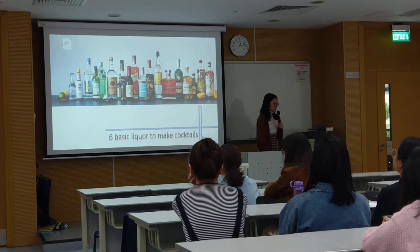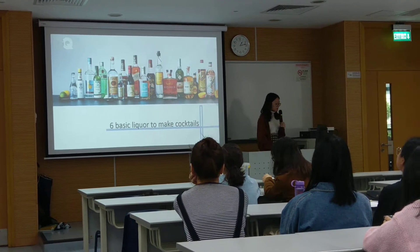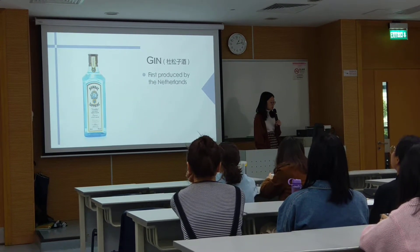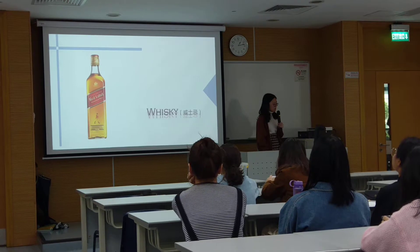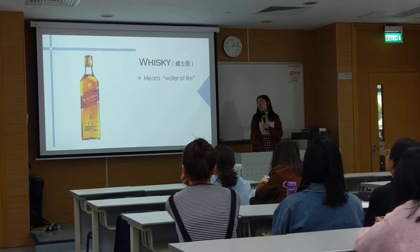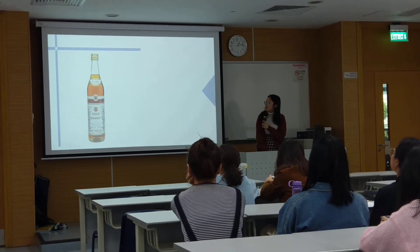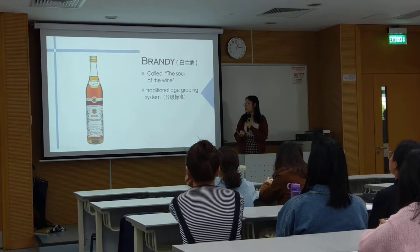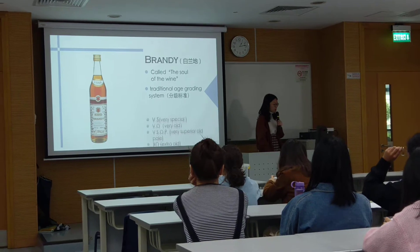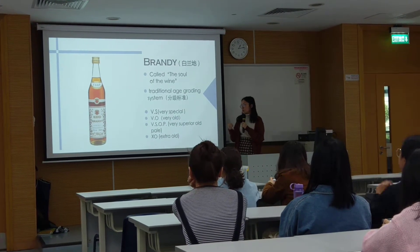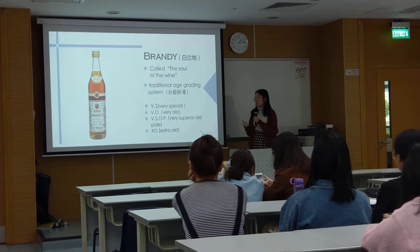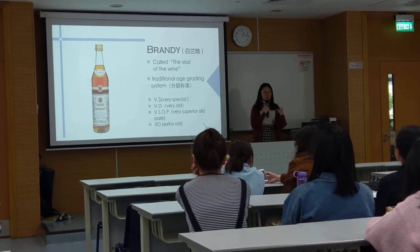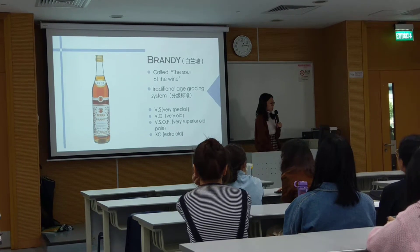To make a cocktail, we have six basic liqueurs. They are gin, which was first produced by the Netherlands; and whiskey, which means the water of life; and brandy, which is called the salt of the wine. Brandy has a traditional age-grading system: VS means very special, VO means very old, VSOP means very superior old pale, and XO — the one you're most familiar with — means extra old.